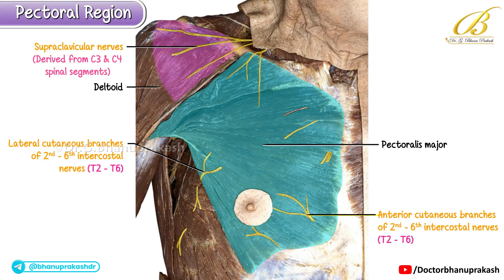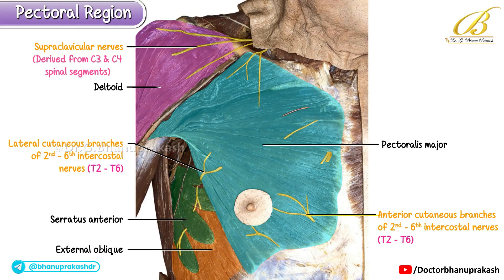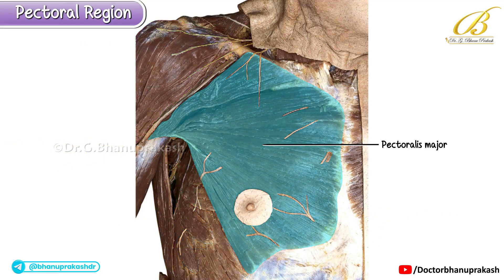Now let's identify the muscles visible in this view: one, pectoralis major; two, deltoid; three, serratus anterior; four, external oblique; five, latissimus dorsi.